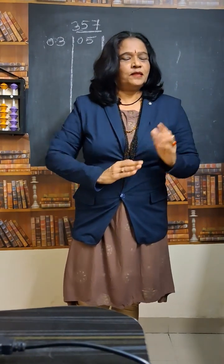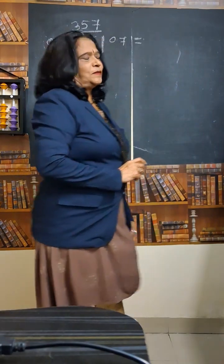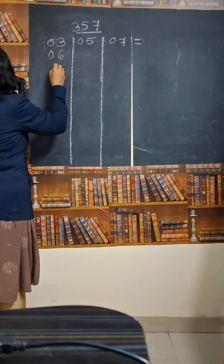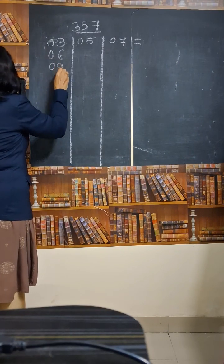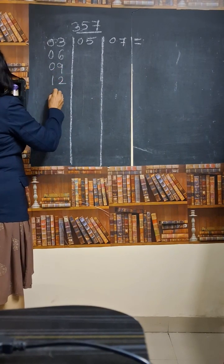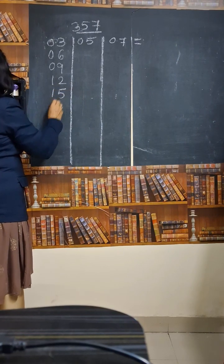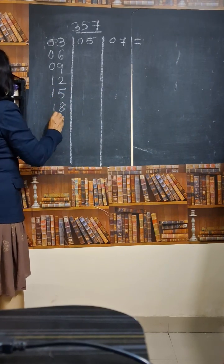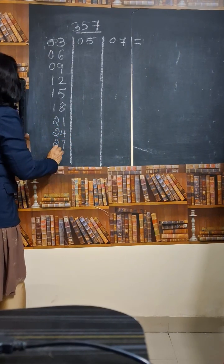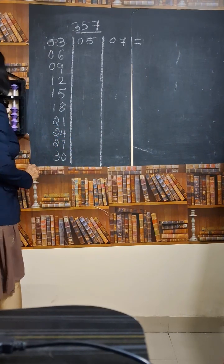After writing 3 tables, what to do? Let us see. First I will write: 3 1s are 3, 3 2s are 6, 3 3s are 9, 3 4s are 12, 3 5s are 15, 18, 21, 24, 27, 30.